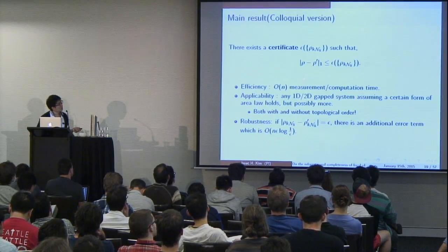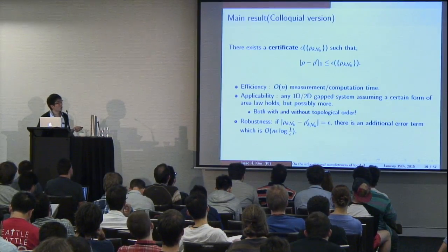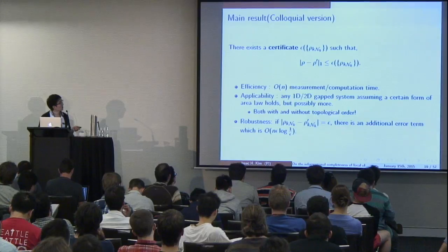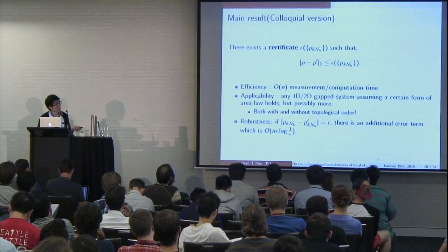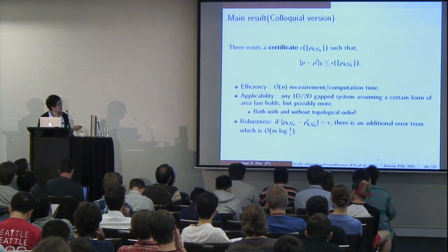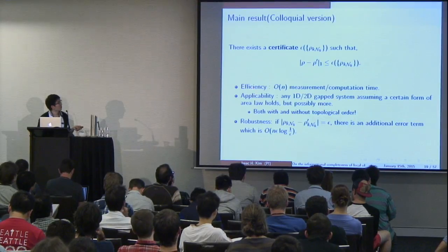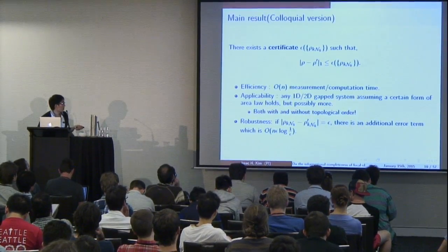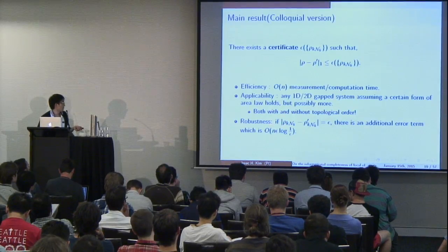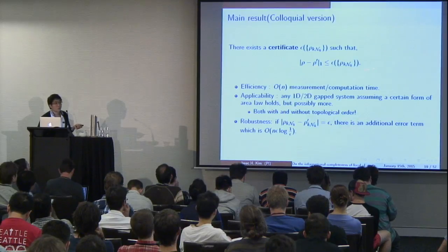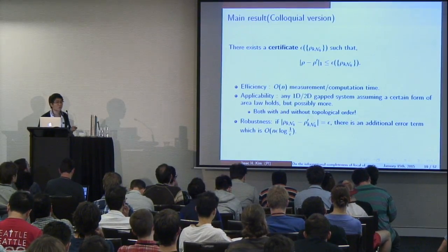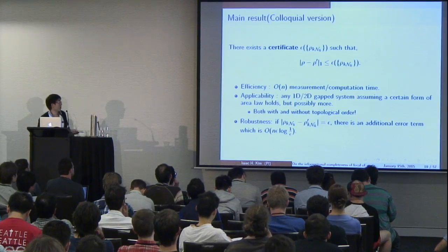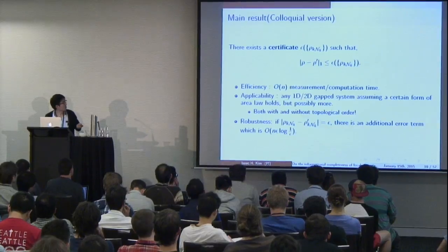On the left-hand side, you have the trace distance between rho and rho-prime. To remind you: rho was the state you prepared in your lab and rho-prime is the state I reconstructed — my guess of the state. On the right-hand side, it's some function epsilon which only depends on the local reduced density matrices. This is why you can efficiently calculate this with order-N measurement and computation time. It's applicable to many interesting systems and it is robust: if rho and rho-prime are locally approximately equal rather than exactly equal, you get an additional error term scaling like order N·epsilon·log(1/epsilon), which isn't terrible. This is the main result of this talk.